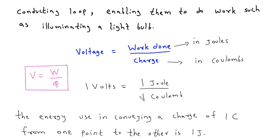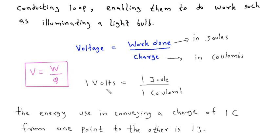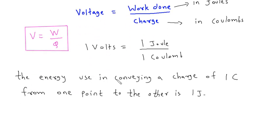When 1 coulomb of charge moves from one potential to another and 1 joule of energy is used, this is 1 volt. The energy used in conveying 1 coulomb of charge from one point to another is 1 joule.